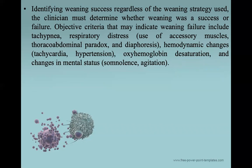Regardless of weaning strategy, the clinician must determine whether weaning was a success or failure. How do we determine if the patient successfully passed the weaning trial? This depends on objective criteria that may indicate weaning failure, including tachypnea, respiratory distress with use of accessory muscles, thoracoabdominal paradox, diaphoresis, any hemodynamic change such as tachycardia or hypertension, hypoxia, and any change in mental state like somnolence or agitation. This is why, when giving the patient a weaning trial, you must be beside the patient watching for any of these indicators of weaning failure.